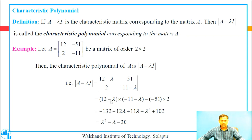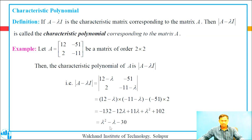The determinant equals (12 minus lambda)(minus 11 minus lambda) minus (minus 51)(2). Expanding: 12 times minus 11 is minus 132, 12 times minus lambda is minus 12 lambda, minus lambda times minus 11 is positive 11 lambda, minus lambda times minus lambda is positive lambda squared, and minus of minus 51 times 2 is positive 102. This equals lambda squared minus lambda minus 30. Therefore, the characteristic polynomial of the given matrix A is lambda squared minus lambda minus 30.